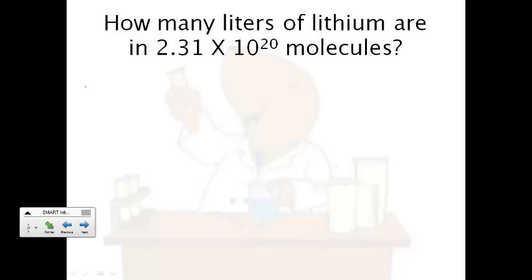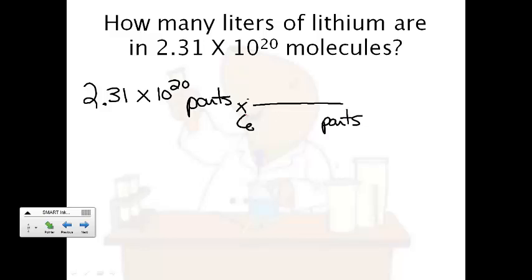Alright, so to start with all we have is the 2.31 times 10 to the 20th. And molecules are the same as particles, right? So I'll just write parts right there. Now if you have particles on top, particles just go on the bottom. And from our conversion factors we know that it's got to be 6.02 times 10 to the 23rd. And one mole on top. Now we weren't looking for moles, we were looking for liters. So we've got to keep going.